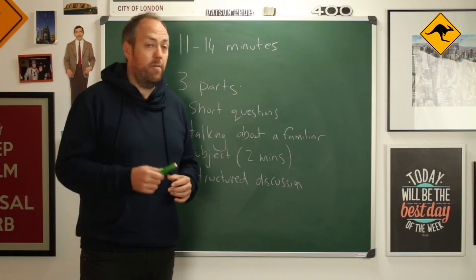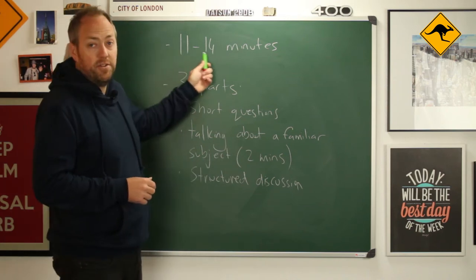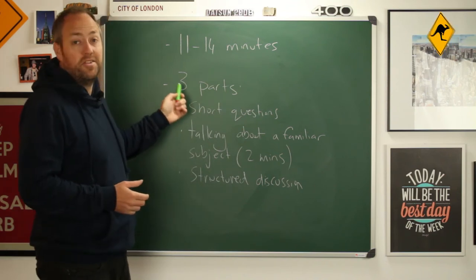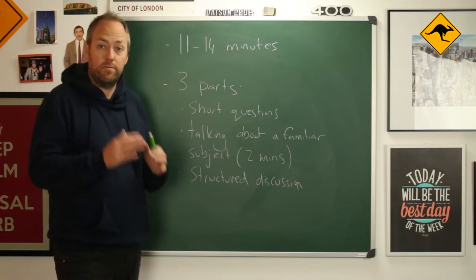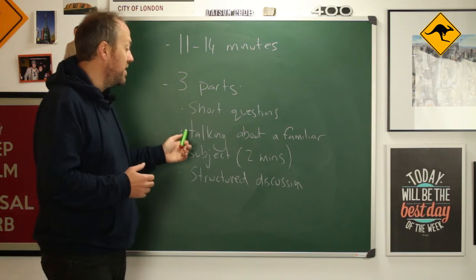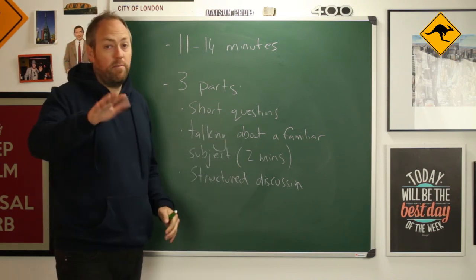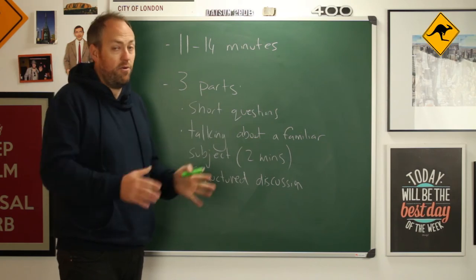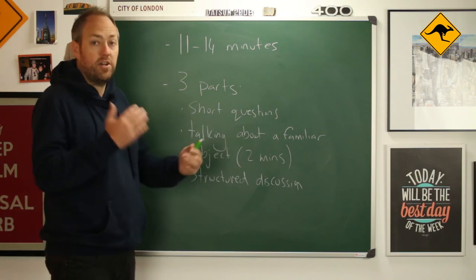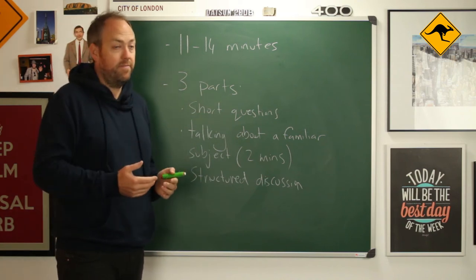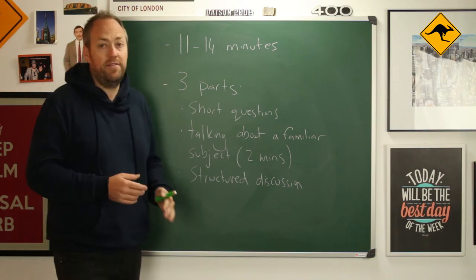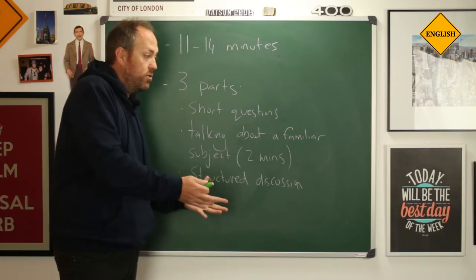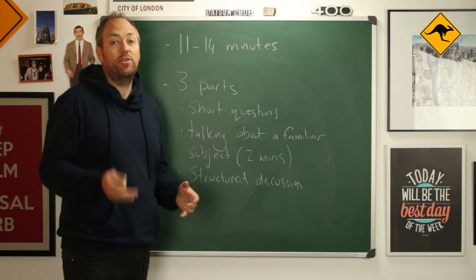First let's look at the format of the exam. It's from 11 to 14 minutes depending on how long you talk, and it consists of three parts. The first part is some short questions. The second part is talking about a familiar subject and this lasts for approximately two minutes, so you're expected to talk for two minutes on your monologue. And then we have a structured discussion with you and the examiner. So all of this together will be about 11 to 14 minutes. So now how do they decide whether you're a band three or a band eight? Let's have a look at the assessment criteria.